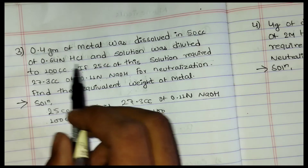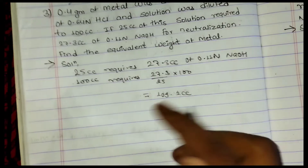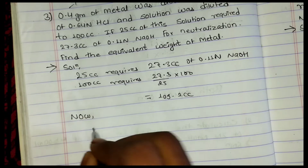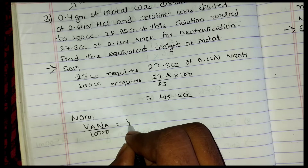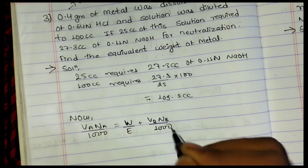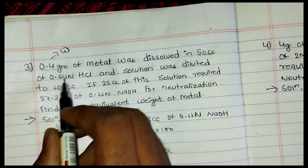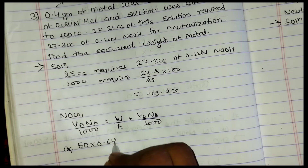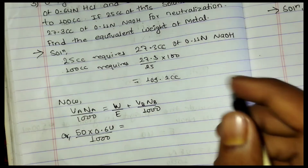Given: weight of metal W = 0.4 gram. Using the formula: V_a × N_a / 1000 = W / E + (V_b × N_b) / 1000. Substituting values: 50 × 0.64 / 1000 = 0.4 / E + 109.2 × 0.11 / 1000.